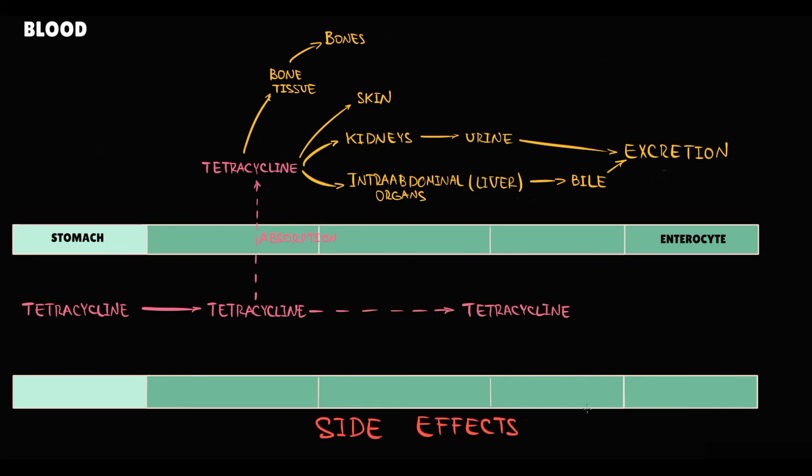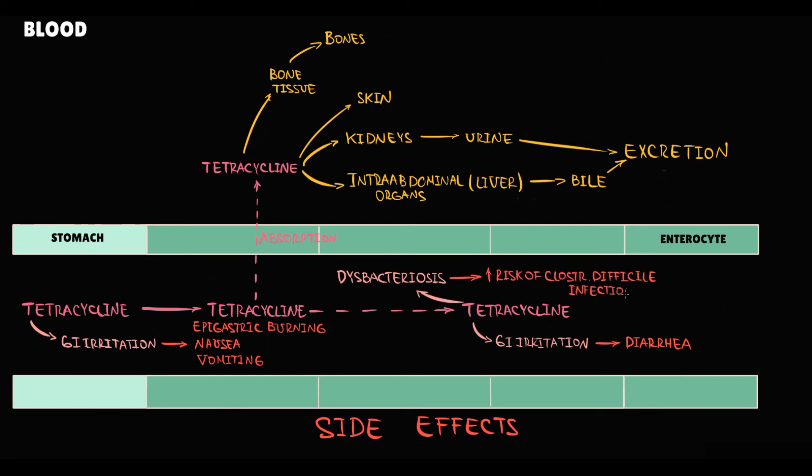Tetracyclines after oral administration can produce GI irritation that in the stomach manifests with epigastric burning, nausea, and vomiting. In the intestine, GI irritation manifests as diarrhea. Because tetracyclines are incompletely absorbed in the intestine, they can significantly disrupt normal microflora that results in dysbacteriosis. And dysbacteriosis greatly increases the risk of Clostridium difficile infection, so-called pseudomembranous colitis.